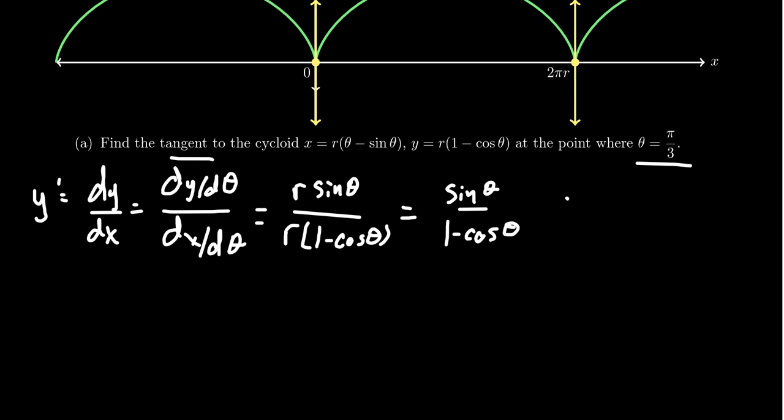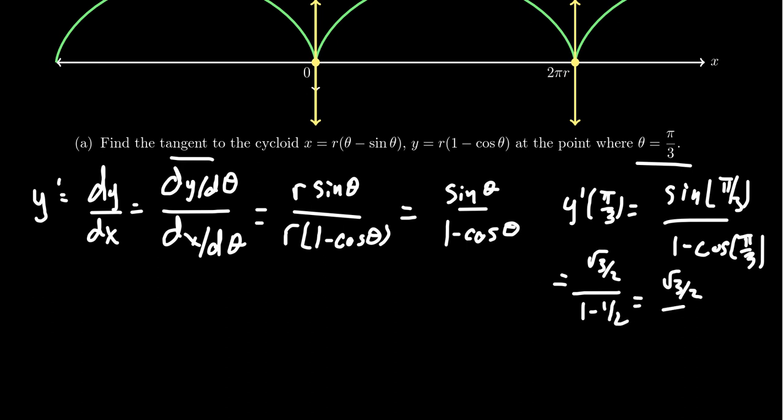So if we evaluate y prime at pi thirds, we plug in pi thirds. We get sine of pi thirds, which is root 3 over 2, and then 1 minus cosine of pi thirds. Cosine of pi thirds is 1 half, so 1 minus 1 half is 1 half. Simplifying this compounded fraction, we get root 3 over 2 times the reciprocal 2 over 1. The 2's cancel and we just get square root of 3. That is the slope of the tangent line at that point.